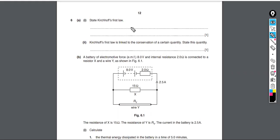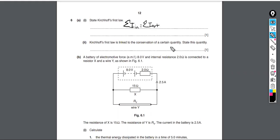To put it in a complete sentence: the sum of the currents entering a point is equal to the sum of the currents leaving that point. That law — Kirchhoff's First Law — is linked to the conservation of charge. So all the current entering a point equals all the current leaving.